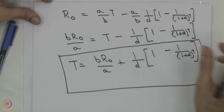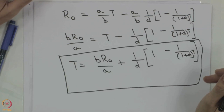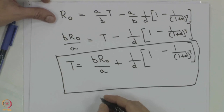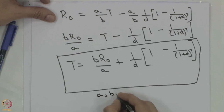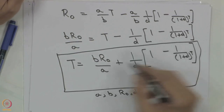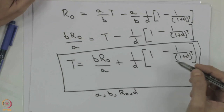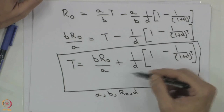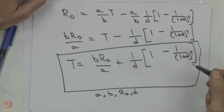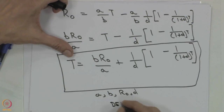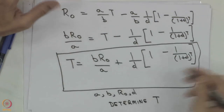We have now solved for capital T—the date of exhaustion—in terms of coefficients A, B, R0, and d, which are all known. Note this is an equation with T on both sides, so it must be solved iteratively: assume a value of T, compute the right-hand side, get a new value of T, and repeat until convergence. We will do a tutorial example where we plug in values and see how this is done.